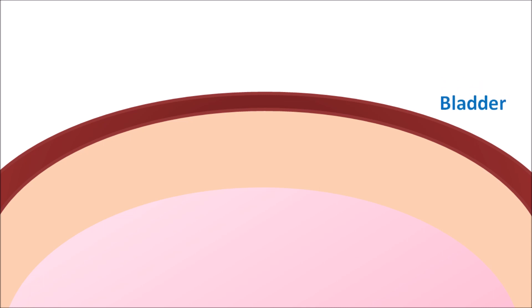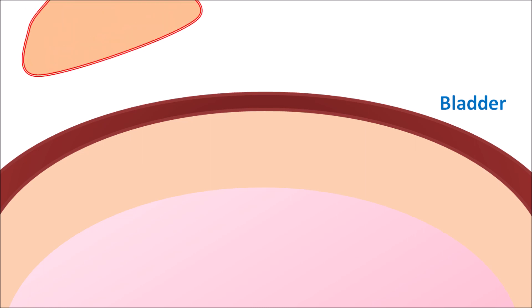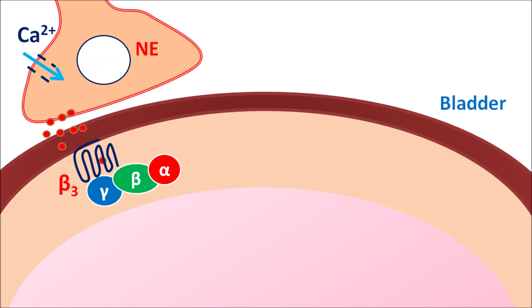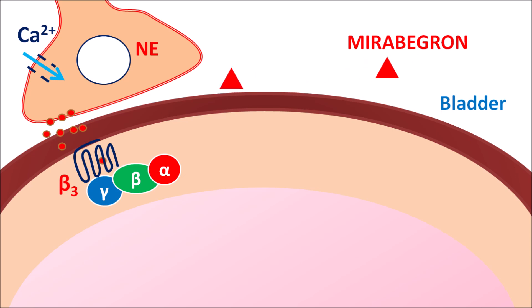Now let us see how this drug acts at the bladder. Both sympathetic and parasympathetic neurons are present to control contraction and relaxation of bladder smooth muscle. Sympathetic neurons release norepinephrine, and on the detrusor muscle, beta-3 adrenergic receptors are present, which are G-protein coupled receptors associated with alpha, beta, and gamma subunits. Mirabegron acts as an agonist on these beta-3 receptors, binding and stimulating them.